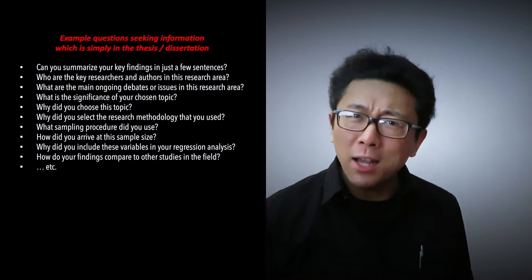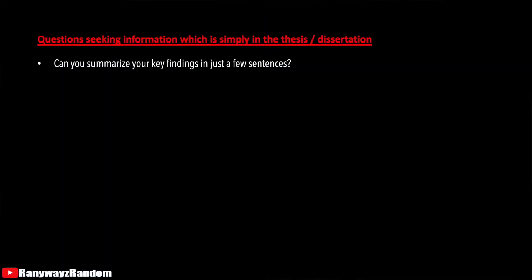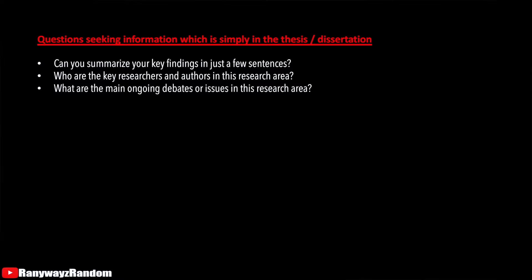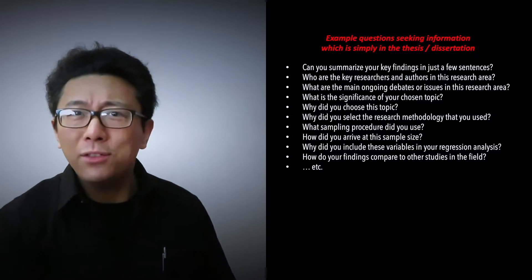These are all questions asking for information already in the thesis or dissertation. If I wrote my thesis properly, and as long as I can remember what I wrote, these questions should be relatively easy to answer. The key findings are summarized in the abstract or executive summary. Key researchers are covered in the lit review and discussion chapters. Ongoing debates are addressed in the lit review and discussion. Topic choice and significance are in the intro. Sample size and procedures are described in the methodology chapter. How findings compare to other studies is discussed in the discussion chapter.